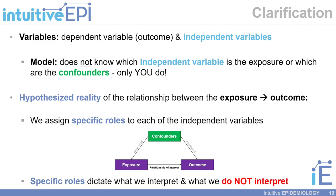These specific roles — whether they're exposures, confounders, or potentially effect modifiers — dictate what we interpret from our multivariable model and what we do not interpret. This multivariable model is typically depicted in the Table 2 of an epidemiologic study.